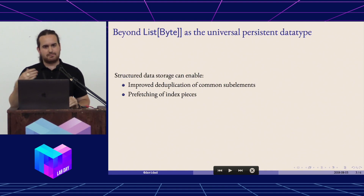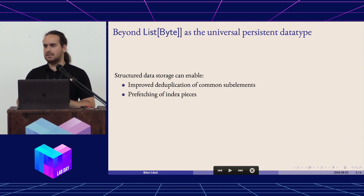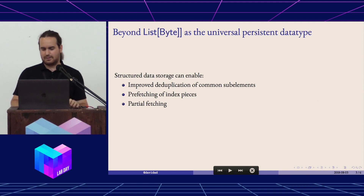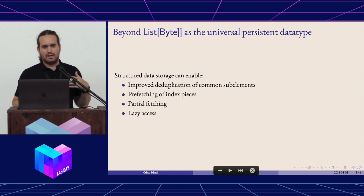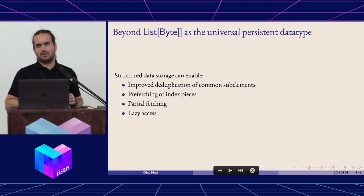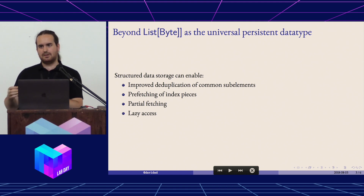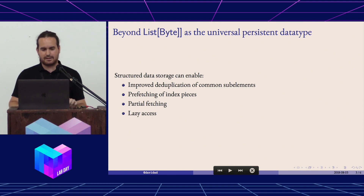We can prefetch pieces like the index of a video file — things we know we're going to need in order to efficiently access the rest of it. We can do efficient accesses of different semantic pieces, different chunks of a file. And we can do lazy access patterns where we load a data structure and have it appear transparently as though it were in memory, but when we follow pointers we're actually following hash links on the back end.